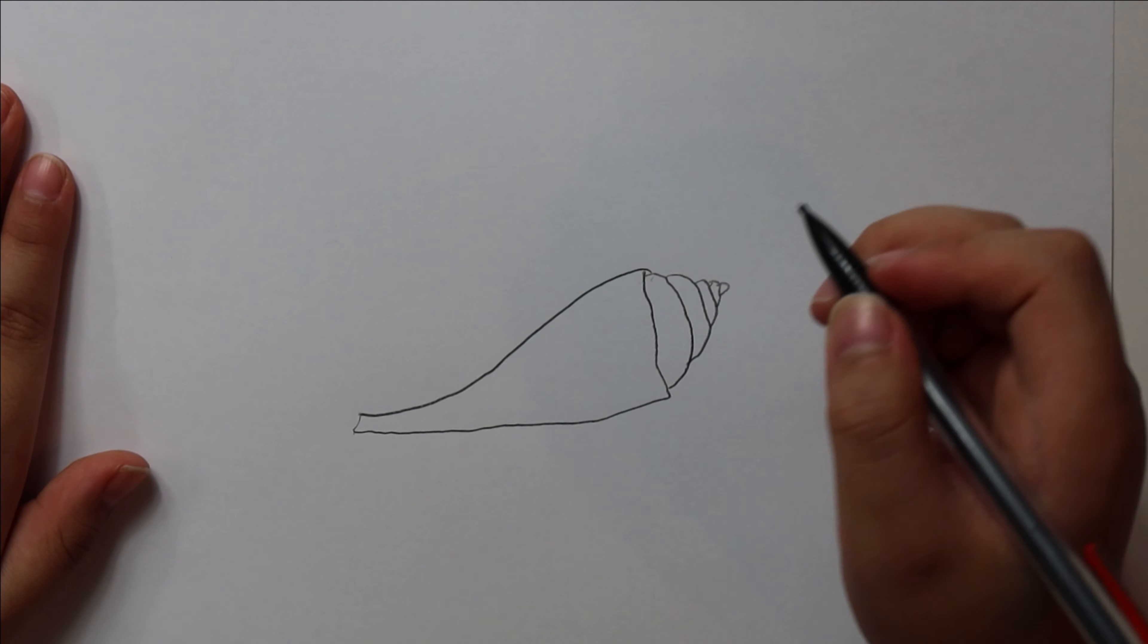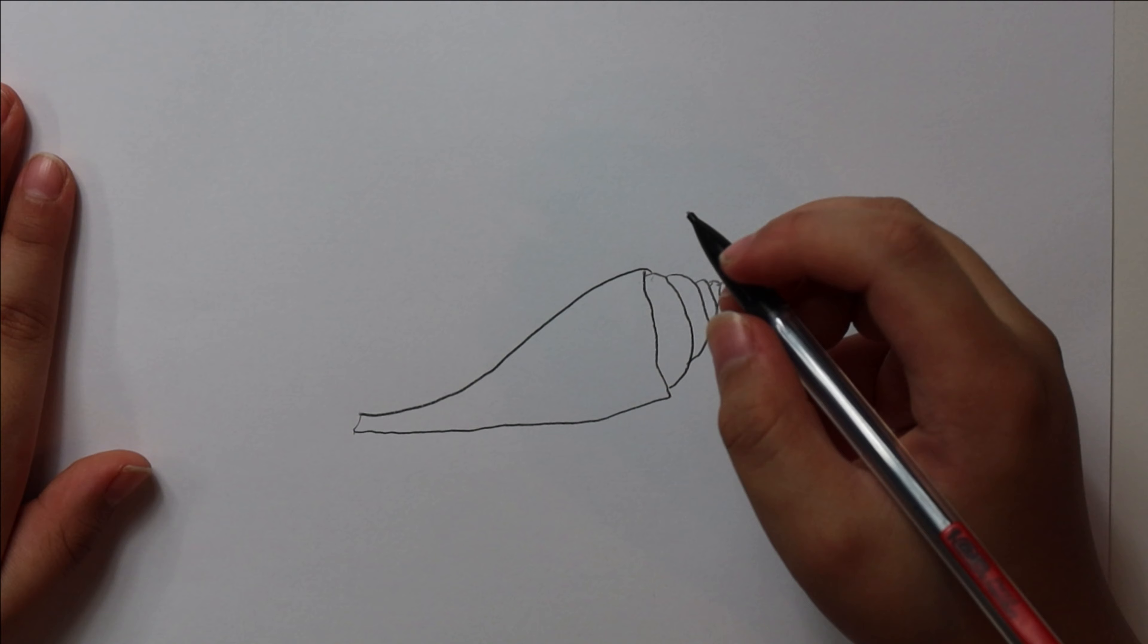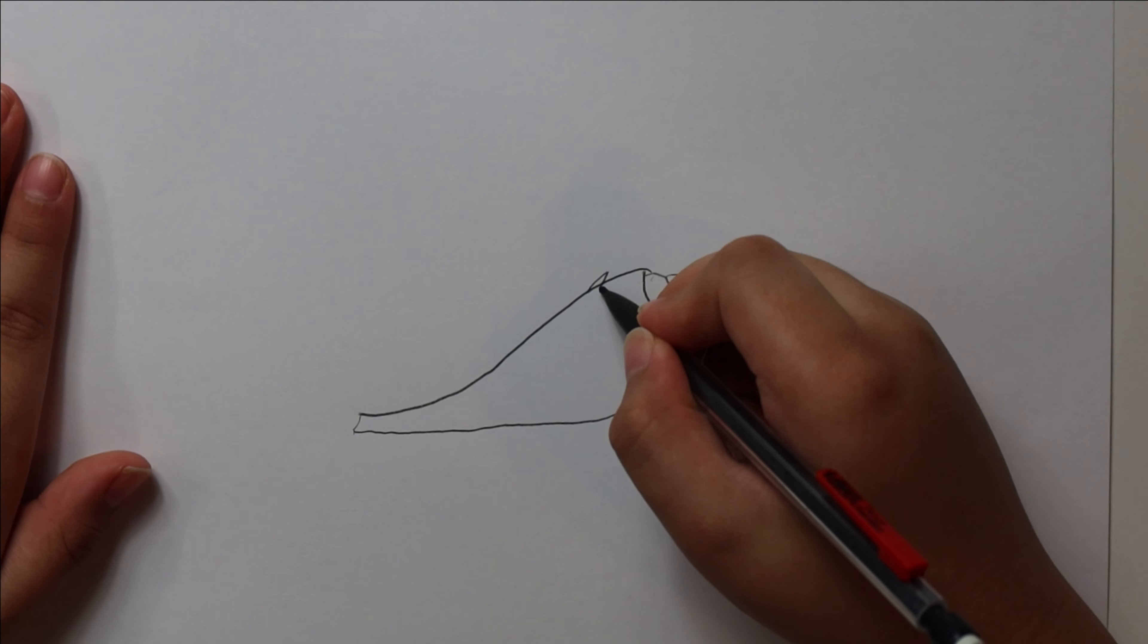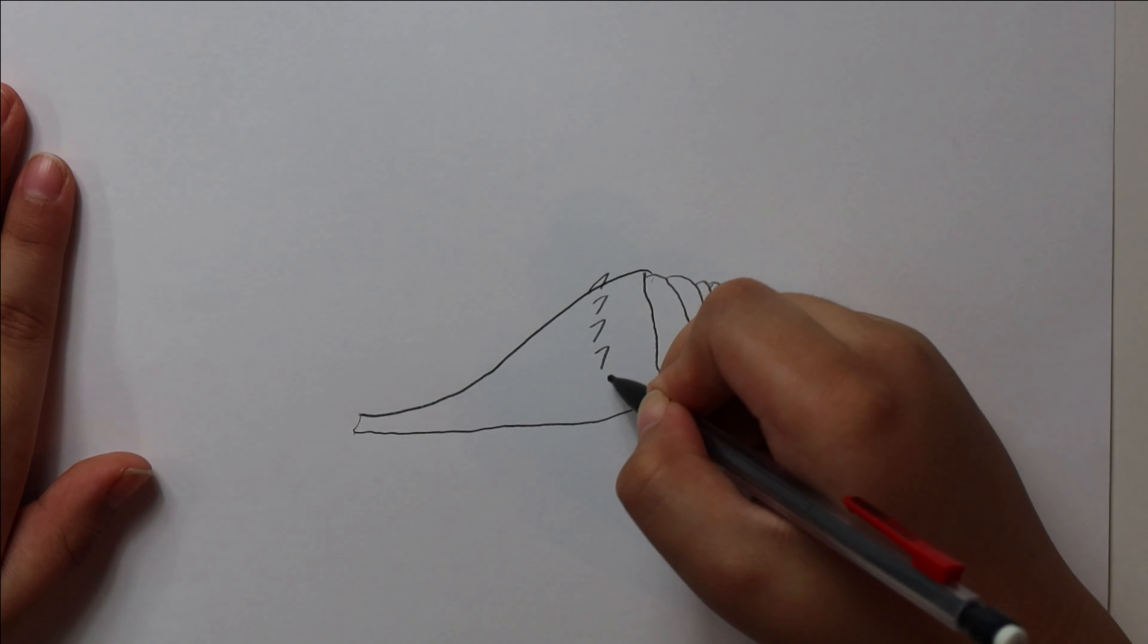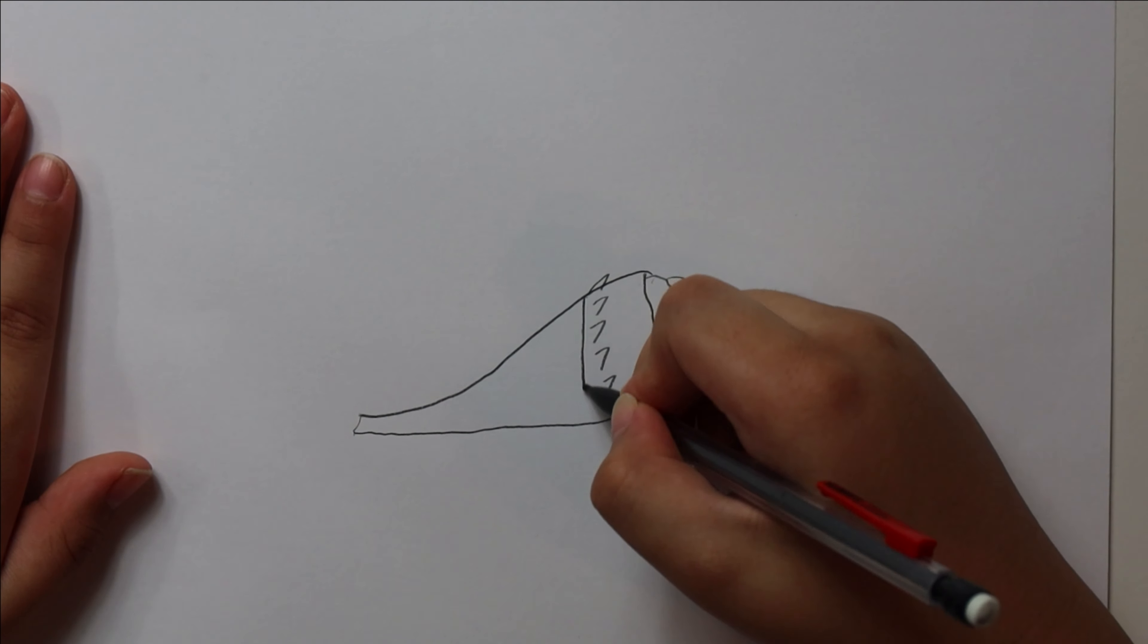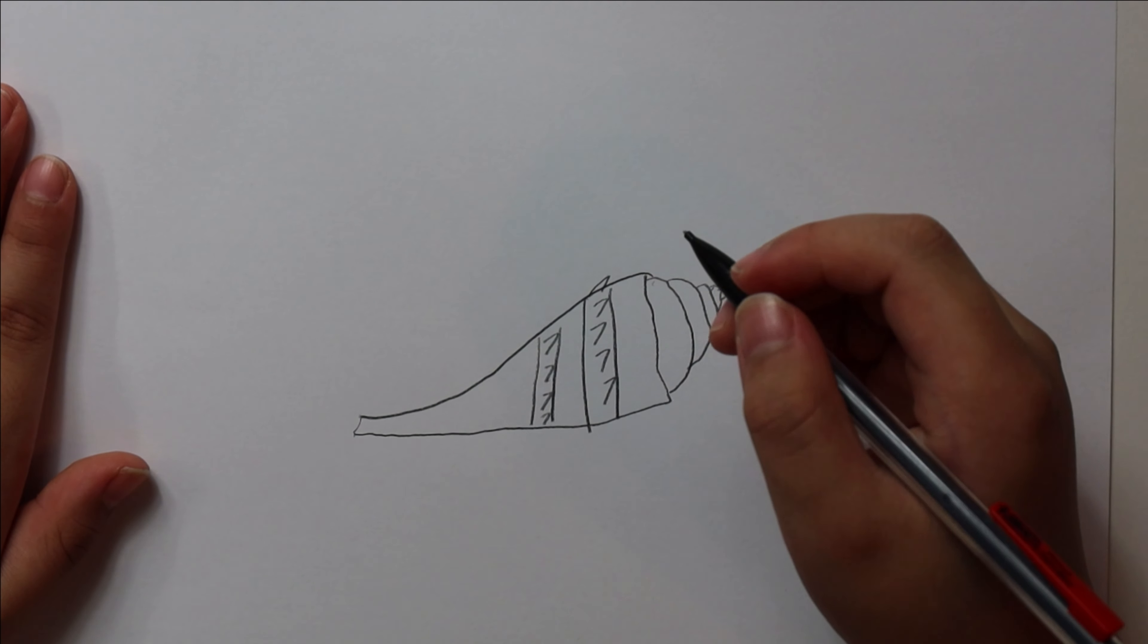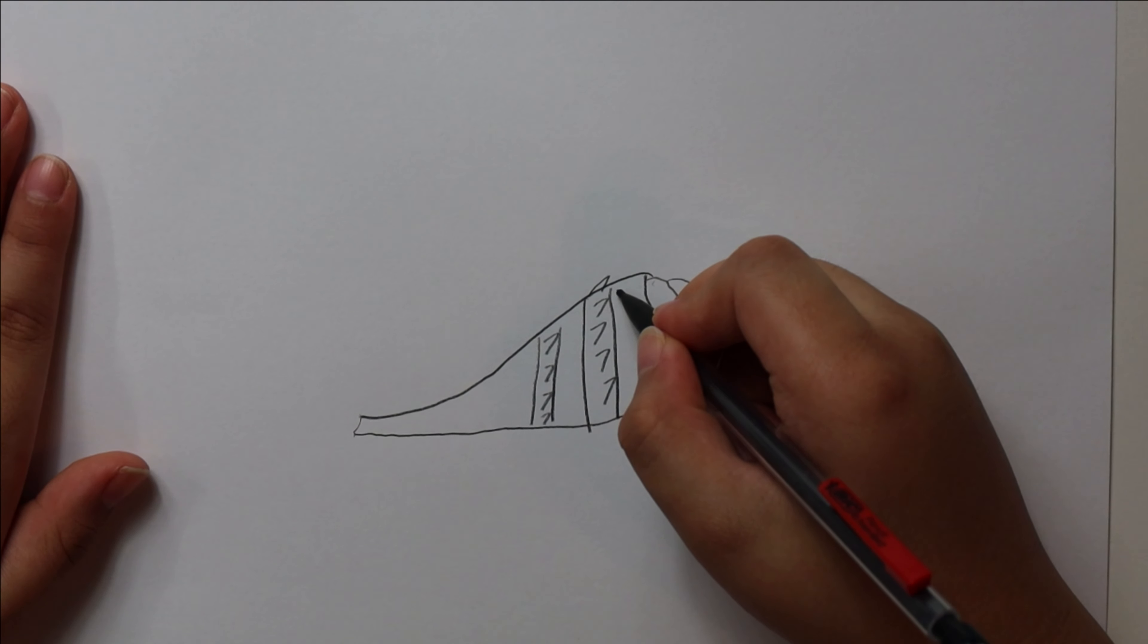If you want to, you can draw edges. Some sire snails do have edges, like this. Draw a lot of lines between them. I personally like doing this because it gives it more character and looks more realistic.